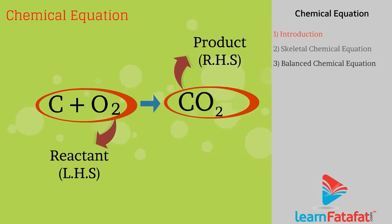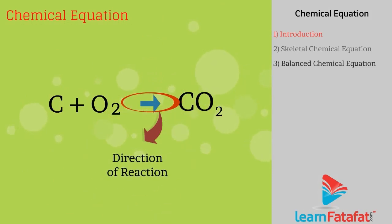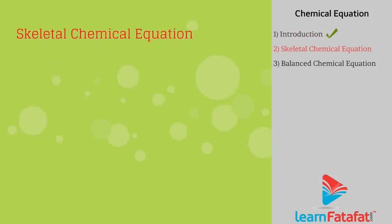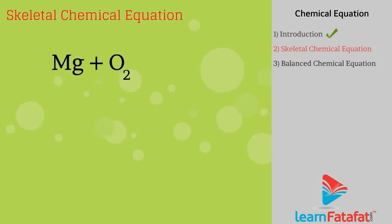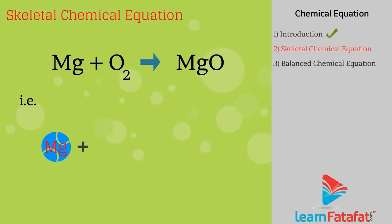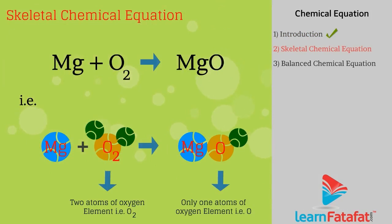An arrow points towards the product and shows the direction of the reaction. A skeletal chemical equation is one where the elements on the reactant side are not equal to the elements on the product side — for example, Mg + O2 → MgO. Such chemical equations are called skeletal chemical equations.